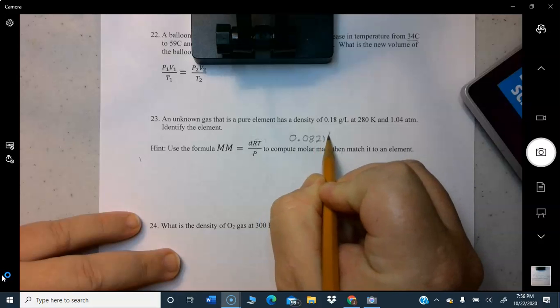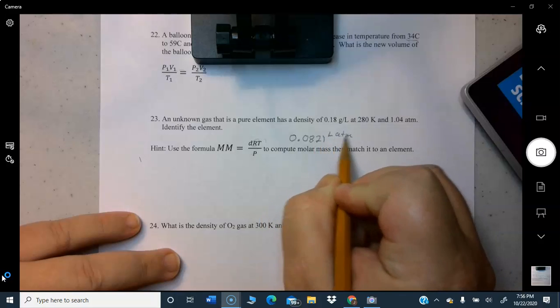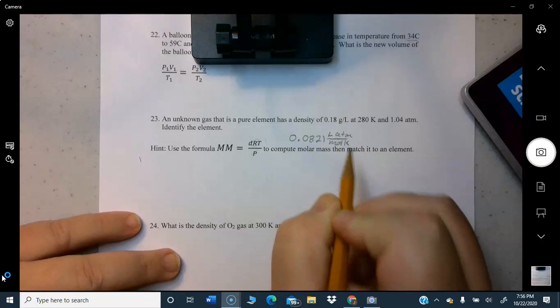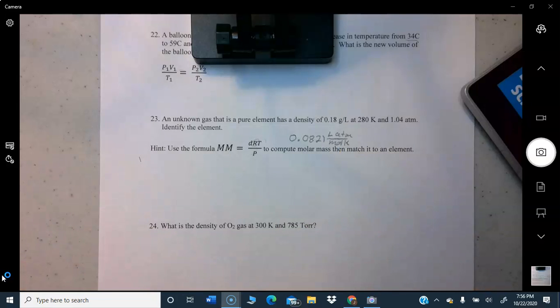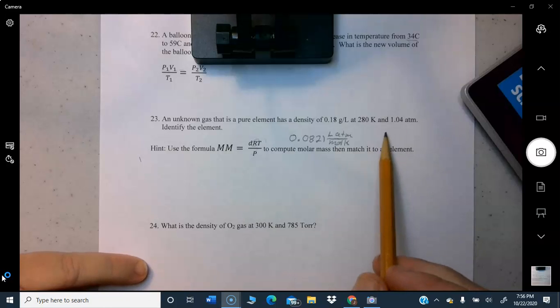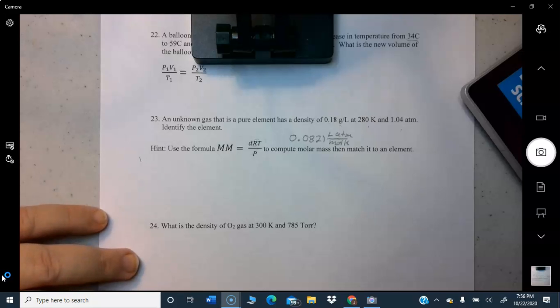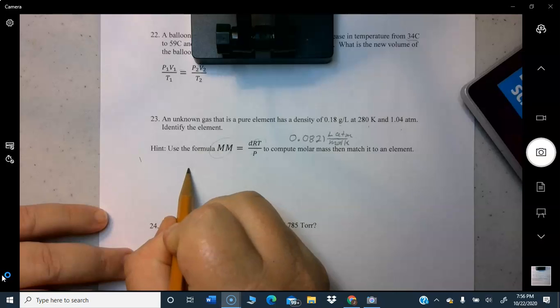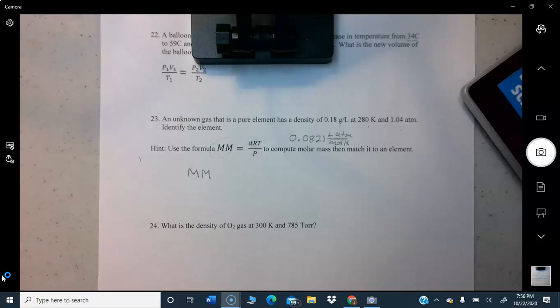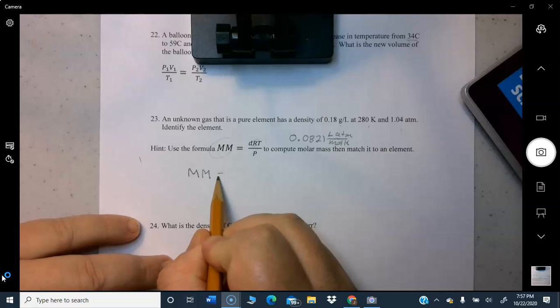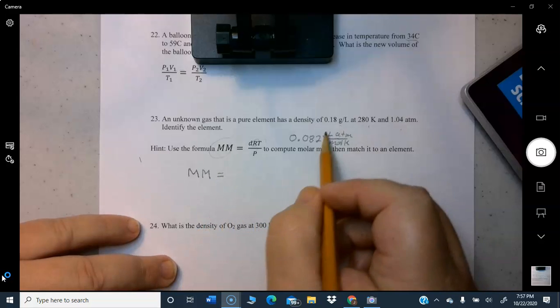For this particular formula you do use the one that we used for PV equals NRT, which is 0.0821 liter atmospheres per mole Kelvin. It's not the 8.31, it's this one. Temperature is good, it's in Kelvin. Pressure is good, it's in atmospheres. Density is in grams per liter, that's what it should be for this particular problem, and we're trying to find what the molar mass is. Let's go ahead and plug it in. Molar mass, remember what molar mass should end up with is grams per mole. It's how many grams you have for one mole of a substance, so that's what we're shooting for for our units of measure. The density it gives us is this.